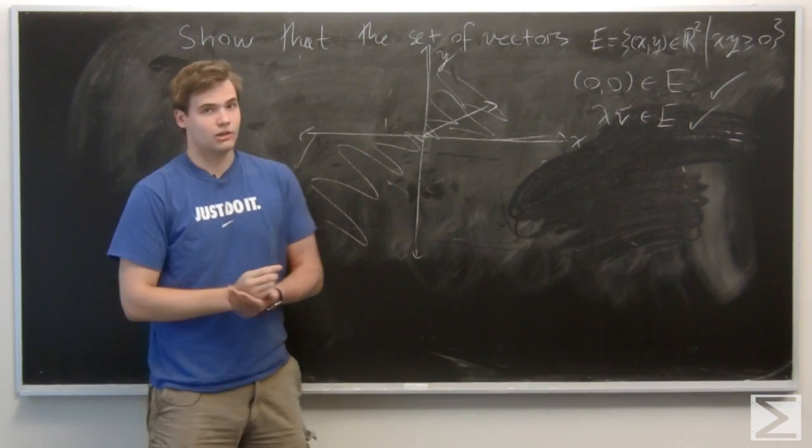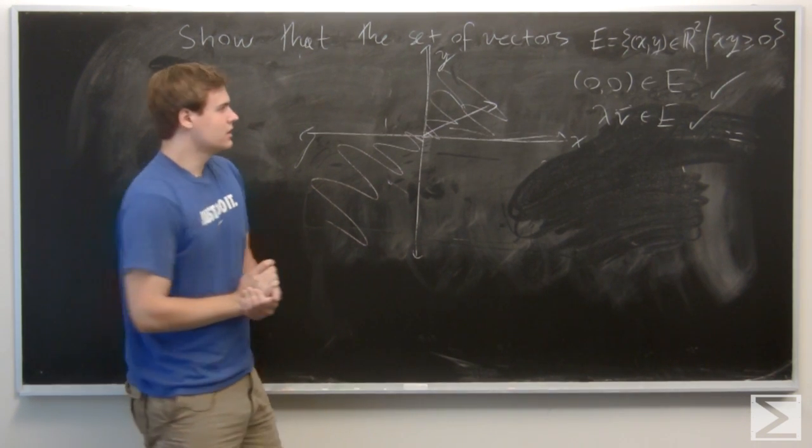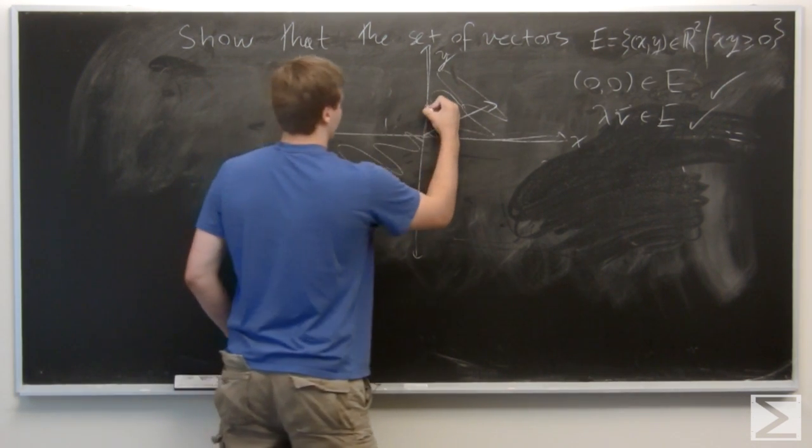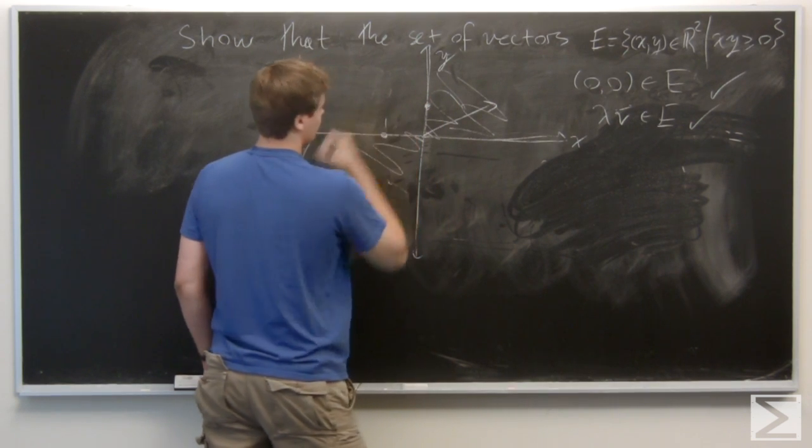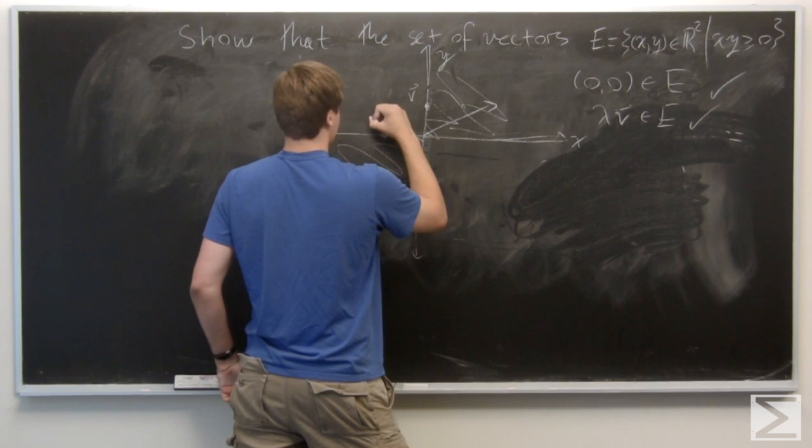So now we want to show that it's not closed under vector addition. An easy way of seeing this is to take a point right here and a point right here. Say this one V and this one W.